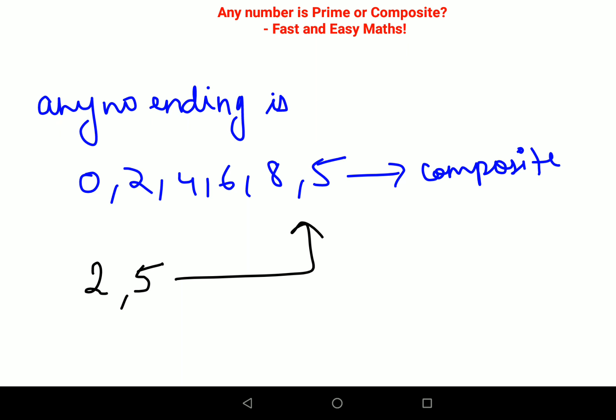If you remove all the even numbers, half of your numbers are gone. If you remove from that also all the numbers which are ending in 5, the number sample space becomes very small for you to judge whether the given number is prime or not.